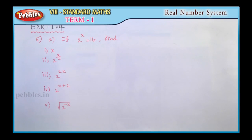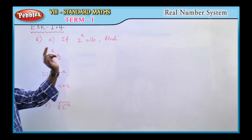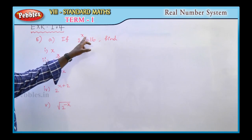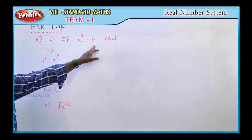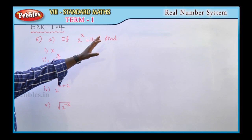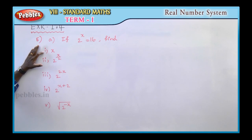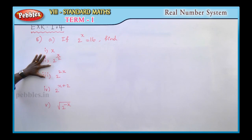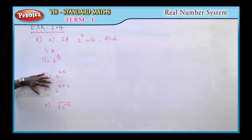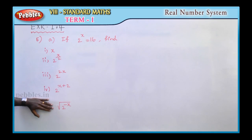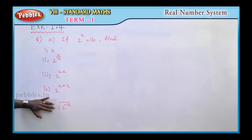Question number 5, first problem. If 2 power x is equal to 16, then find the value of x. Find the value of: 2 power x by 2, 2 power 2x, 2 power x plus 2, square root of 2 power minus x.